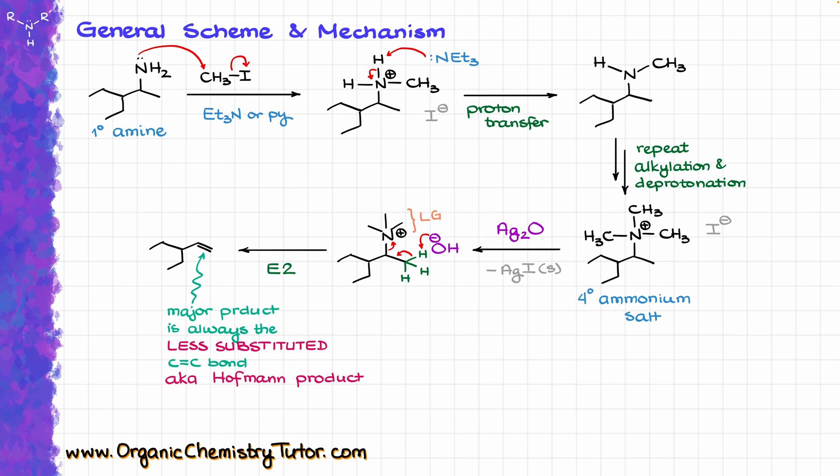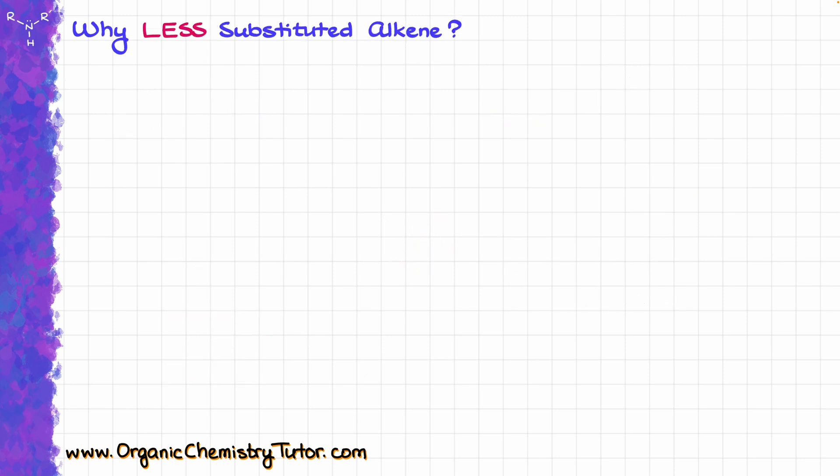You might be wondering why exactly we're getting the less substituted product here. When it comes to this reaction, the elimination can potentially give you two different products. I have green hydrogens on the right side and a blue hydrogen on the left side from my leaving group. If I pull off the blue hydrogen, I would end up with a more substituted bond, the Zaitsev product. However, if I pull the green one, we make the Hoffman product.